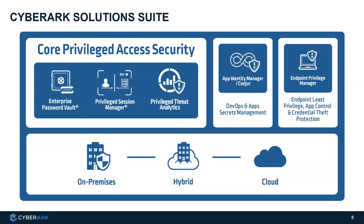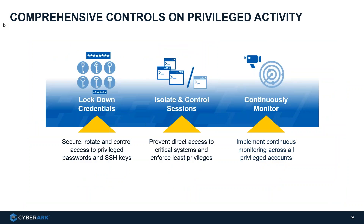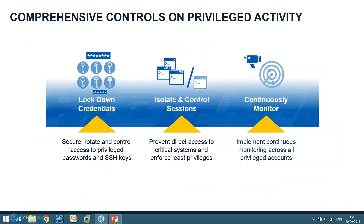Besides the core module, we have two additional modules: one dealing with application identity and the DevOps world, and another dealing with endpoint privileges to protect endpoint servers and workstations. The main goal is to first and foremost lock down credentials, take control over who has access to use those credentials and what they're using them for, and start rotating and managing those credentials automatically. Then we want to isolate access using those credentials to target devices — getting session isolation, control, and monitoring — and continuously monitor who's using those accounts, what they're doing with them, and initiate real-time responses if needed.